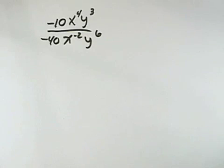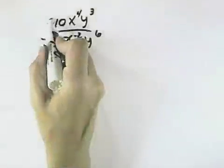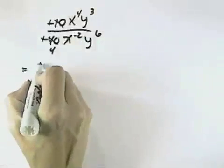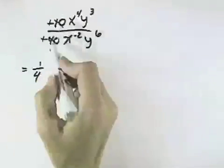We want to simplify this exponential expression. Since the numerator and denominator are negative, I can cancel those. I can also cancel the 10 with the 40 to leave a 4. So that would be one-fourth with my coefficients in front.